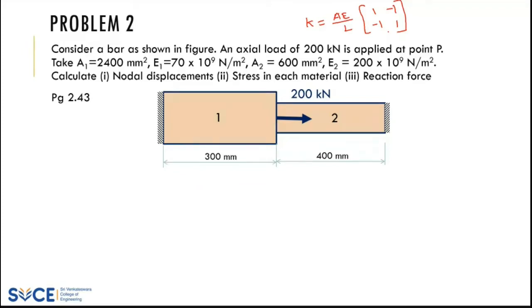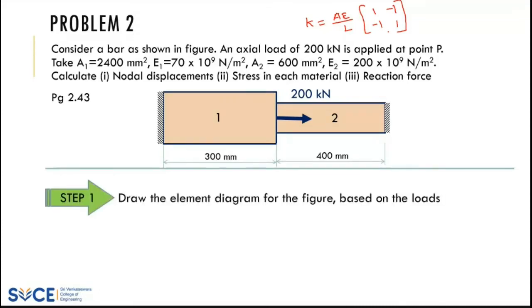I will show this problem step-by-step in a PPT, and these steps will be followed for all bar problems. Step 1 is to draw an element diagram. Whenever there is a difference in cross-section, you split it as a separate element. Whenever a force is acting in between a bar, you also make it a separate element. Whenever the material property changes, you also split it into two elements.